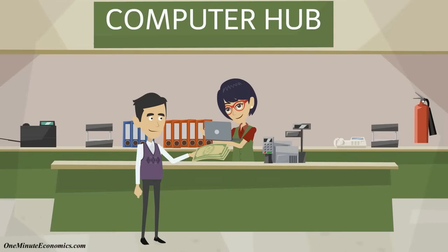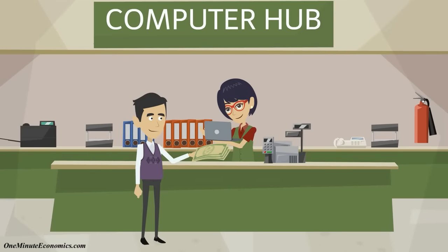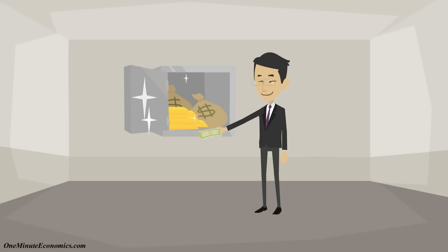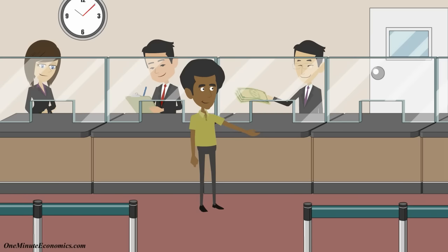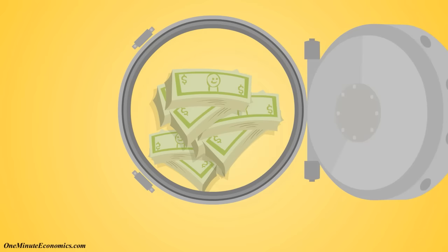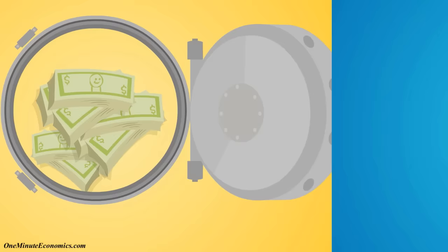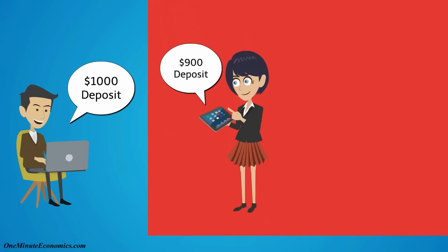Next, Mike uses the $900 to buy a laptop from Karen. Then Karen deposits her $900 at another bank. The bank keeps 10% and lends the remaining $810 to George. There is now $2,710 in the system: John's $1,000 deposit, Karen's $900 deposit, and George's $810 loan.